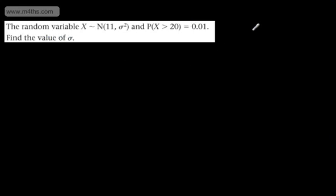So in this case, we're looking for the standard deviation. So this time around, what we're going to say then is the probability that Z, we're going to make this substitution, is greater than 20. What we'll have then is 20 minus 11 divided by σ is going to be equal to 0.01.